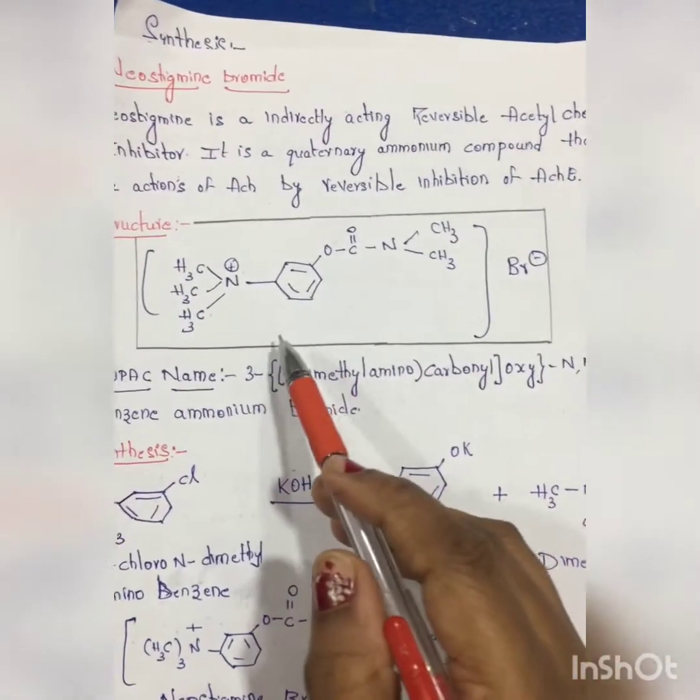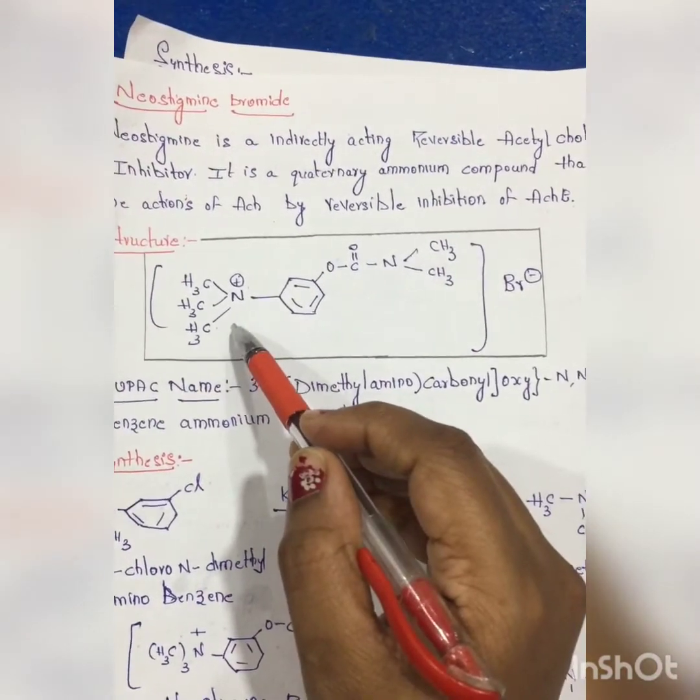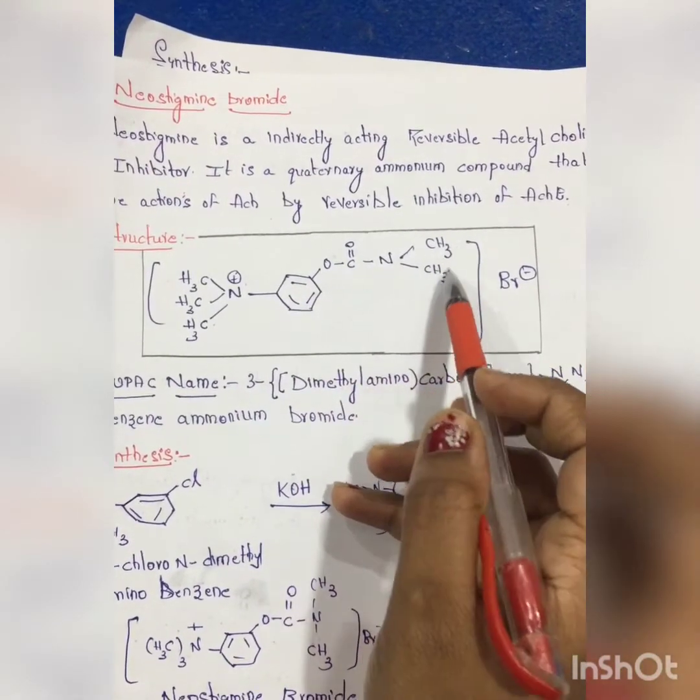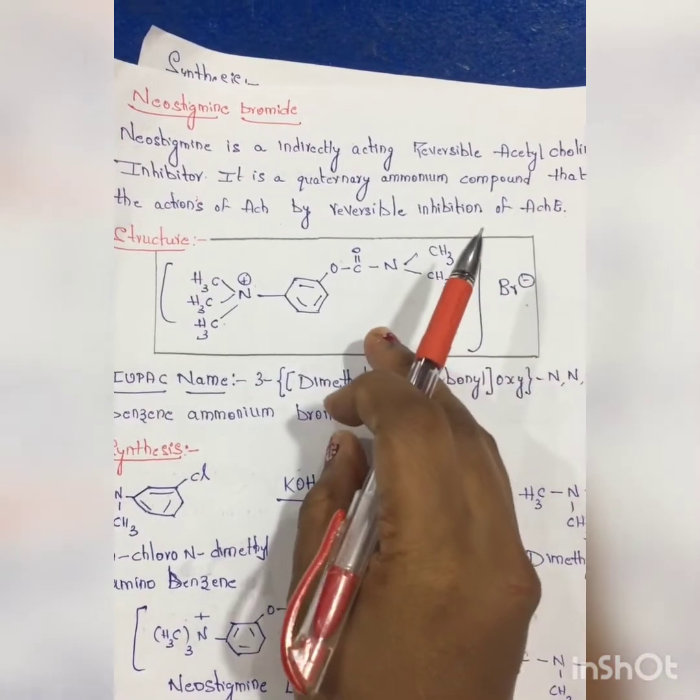So here comes the structure of Neostigmine: quaternary ammonium group, benzene, O-C double bond N-CH3-CH3, bromide. This is the structure of Neostigmine.